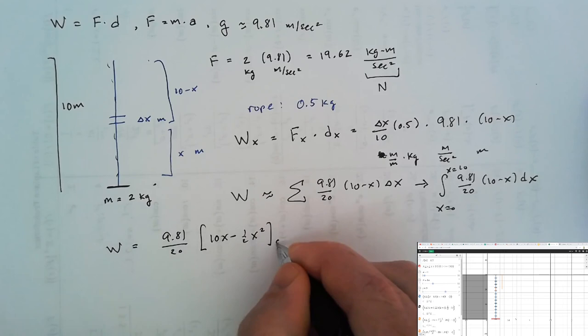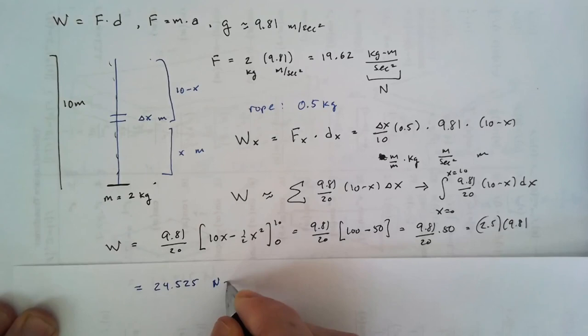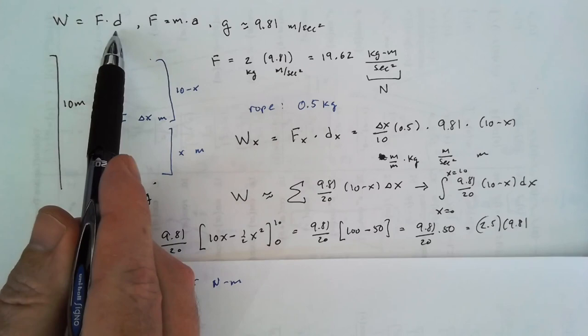And when we work that out, that gives us 24.525 newton meters, because we're multiplying a force in newtons times a displacement in meters, and we often call this unit J for joules.